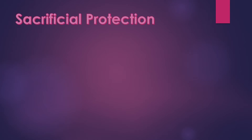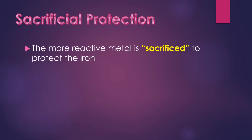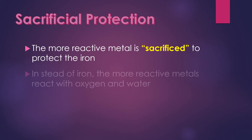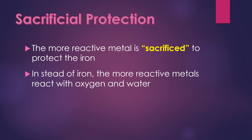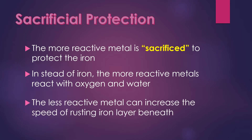The next protection is called sacrificial protection. The more reactive metal is sacrificed to protect the iron. Instead of iron, the more reactive metals react with oxygen and water. We can look at the reactivity series to find which metal is more reactive. Note that a less reactive metal can actually increase the speed of rusting of iron beneath.